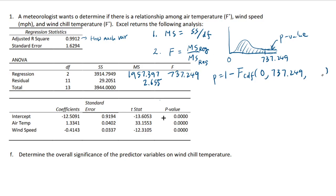This one requires two degrees of freedom values rather than just one like the T distribution, because the numerator has degrees of freedom and the denominator also has degrees of freedom. You have to provide both — those are 2 and 11.